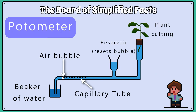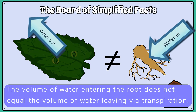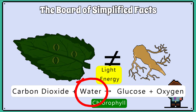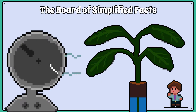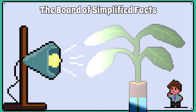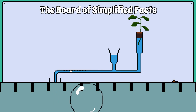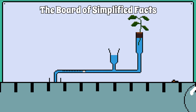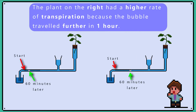We can indirectly measure the rate of transpiration using a photometer. We can't say that all the water we measure leaving the stomata is equal to what entered the roots, because some water is used in photosynthesis. What the photometer is great at doing is showing what happens to the rate of transpiration when a plant is exposed to different conditions. When water evaporates from the stomata, the bubble travels further along the capillary tube towards the plant, so the further the bubble moves in a set amount of time, the higher the rate of transpiration.